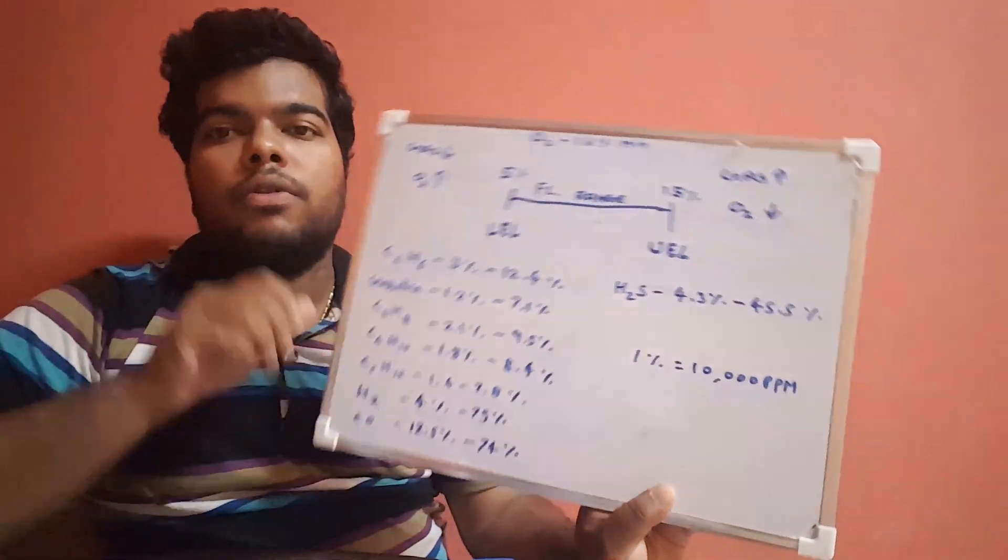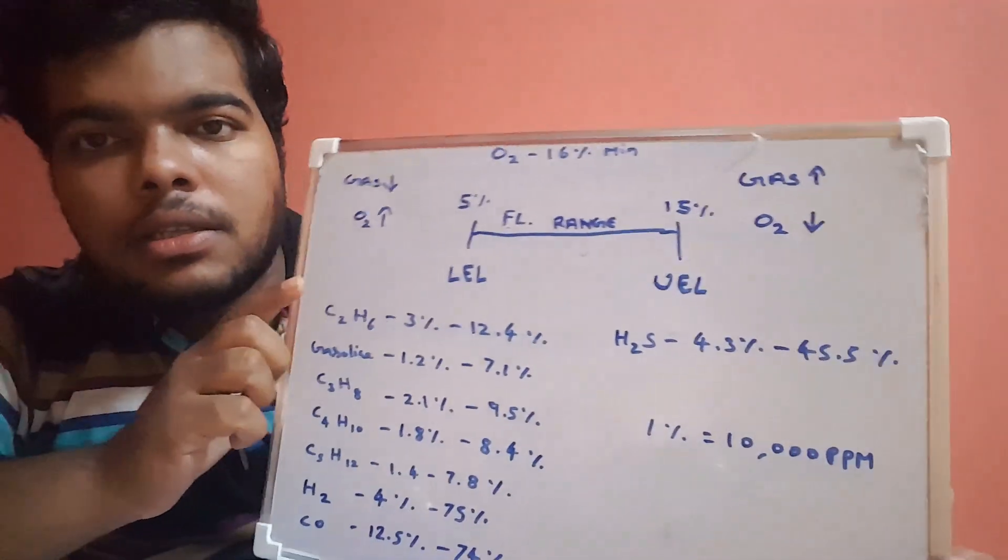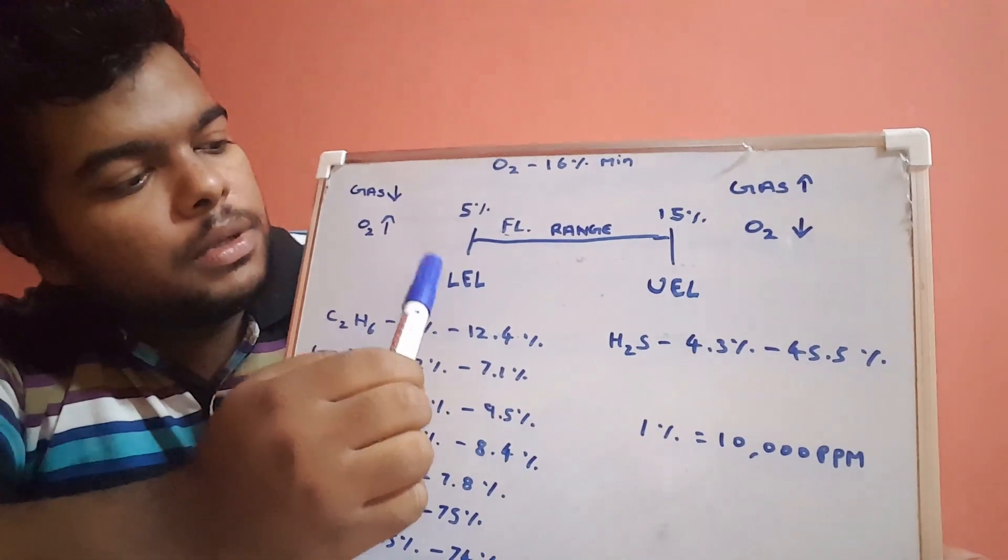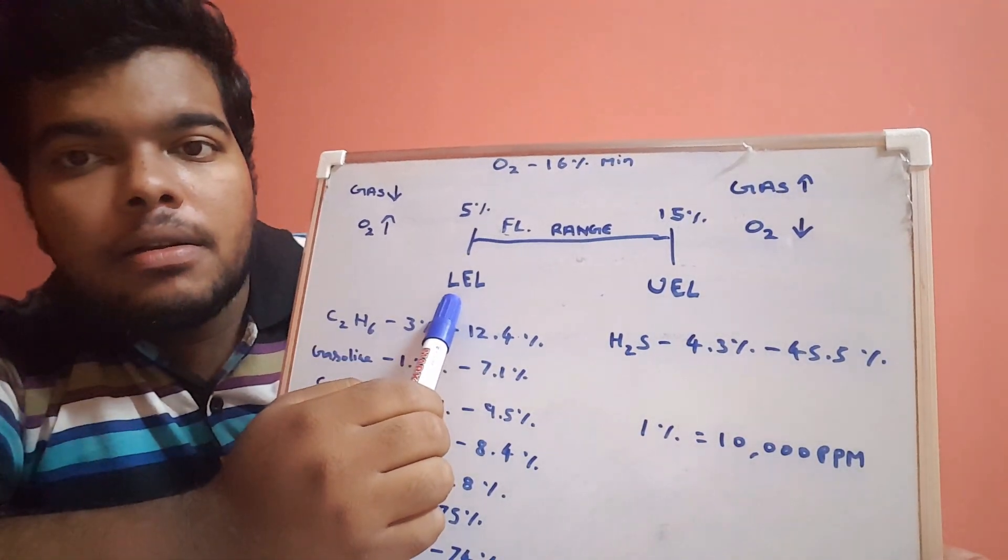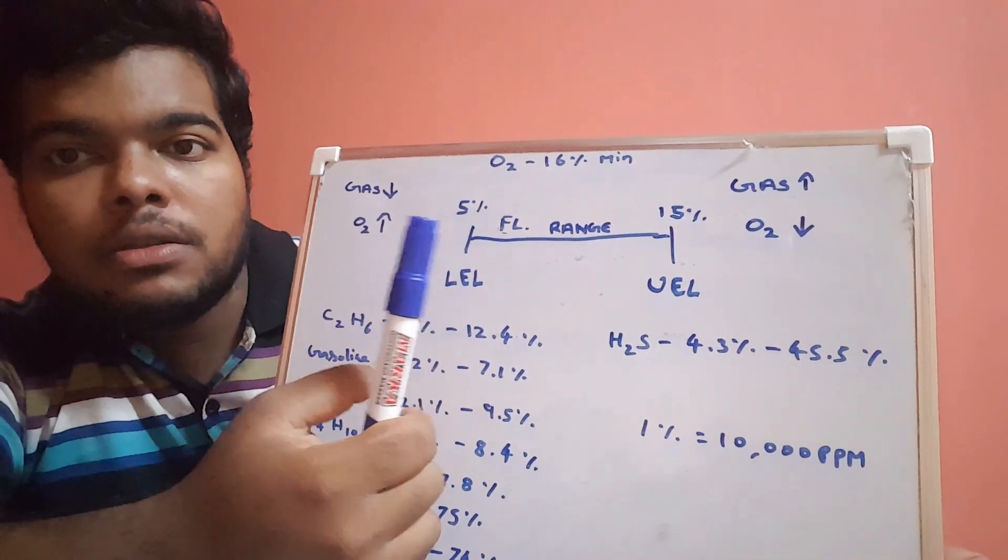To explain it more, I have a little diagram here for your understanding. If you see this, the diagram suggests which is LEL. LEL is a lower explosive limit where the gas value, the vapor of the gas or vapor of the liquid, will be of less amount and oxygen will be of higher amount.